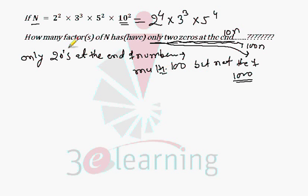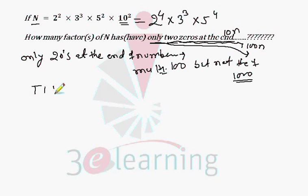We are looking for numbers which are multiples of 100 but not multiples of 1000. So we find the multiples of 100 and subtract the multiples of 1000. The total number of factors of n ending with double zeros are the multiples of 100.